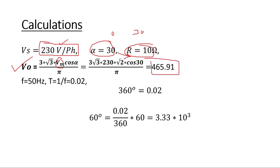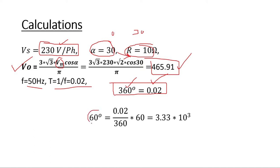The frequency is 50 Hz, so the time period is 1/50 = 0.02 seconds. This means 360 degrees corresponds to 0.02 seconds. To calculate for 60 degrees of duration: (0.02 / 360) × 60 = 3.33 × 10⁻³ seconds. This 60-degree interval is used because the gap between successive thyristor firings is 60 degrees.